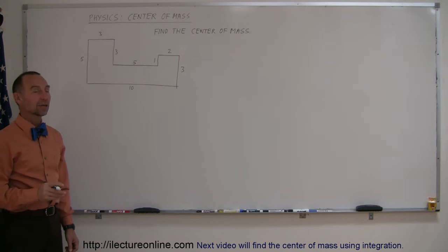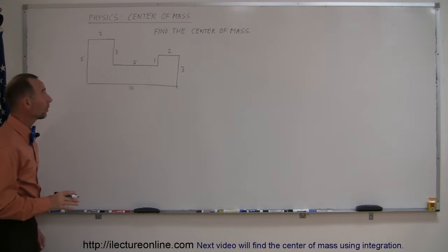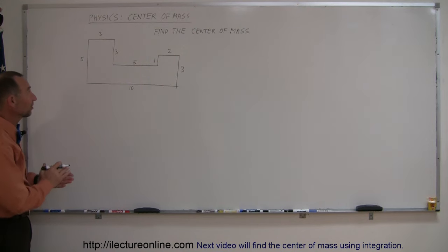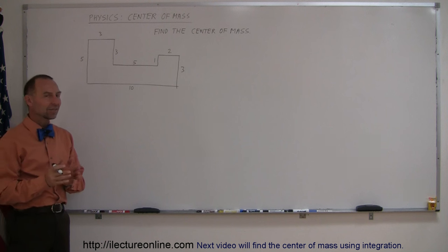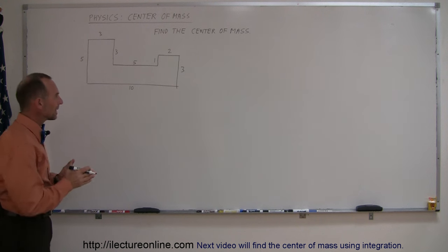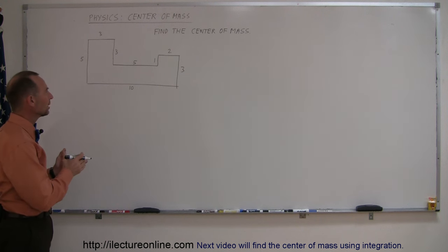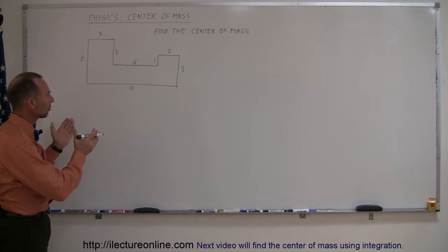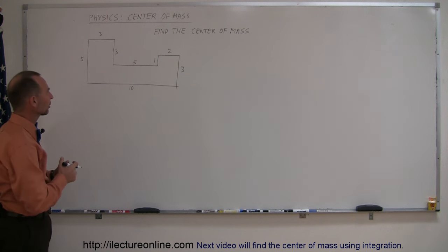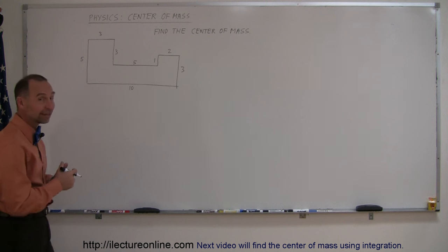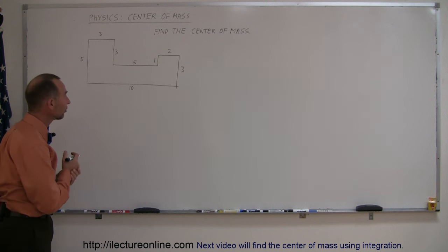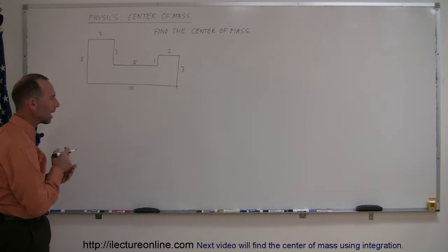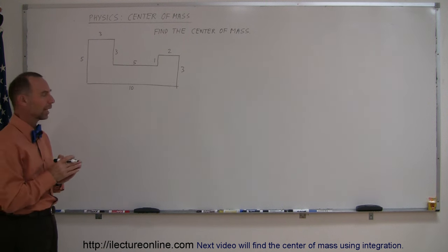Welcome to our lecture online. Here's another example of how to find the center of mass of an object. In this case it's a very irregularly shaped object — it doesn't look like any particular shape. But what if you have to find the center of mass of this? How do you go about doing that?